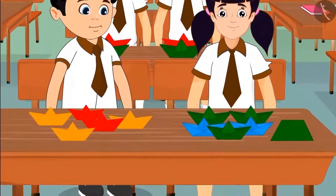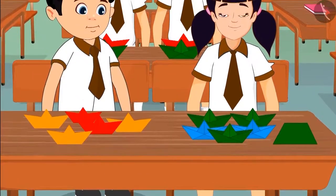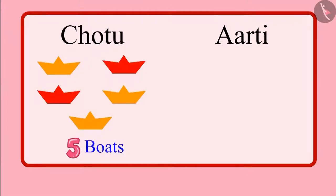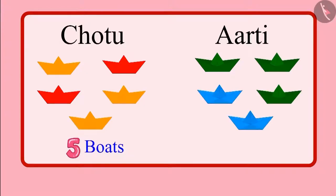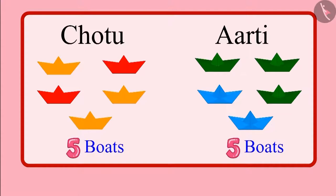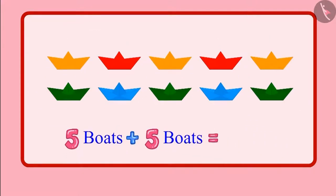Come on children, let us see how many boards Chotu and Aarti made in total. 1, 2, 3, 4, 5. So Chotu made 5 boards and Aarti made 1, 2, 3, 4, 5. That means 5 boards. So children, can you tell me how many boards did Chotu and Aarti make together? Yes, Chotu and Aarti have together made 10 boards.